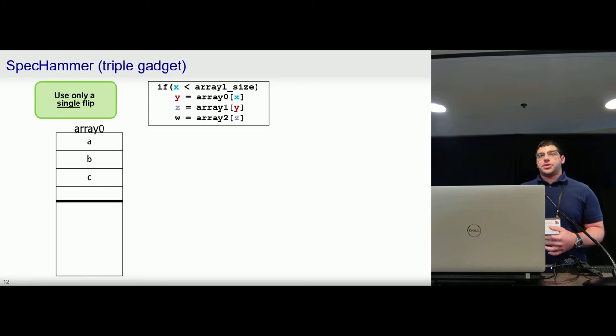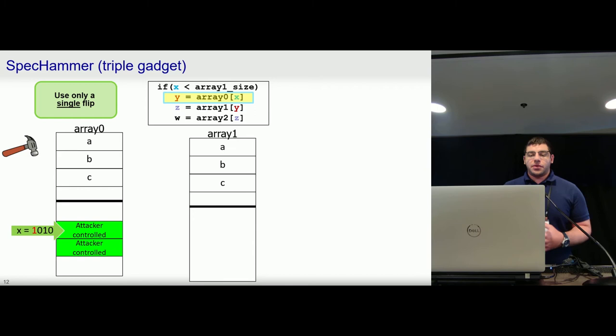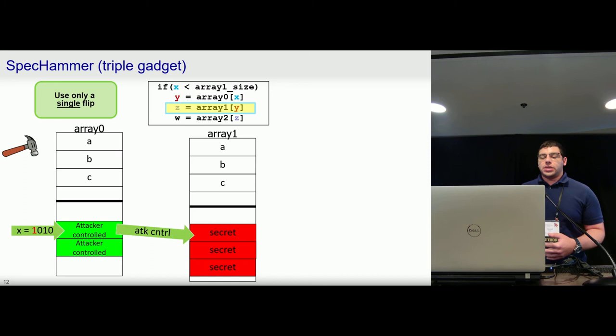And the goal here is to show how we can use just one Rowhammer bit flip in order to arbitrarily target any value in victim memory. So we begin like before, where we call this victim code enough times to naturally train the branch predictor to predict that X will be in bounds. And suppose, again, X is equal to two, we'll now use Rowhammer to flip a bit and point out of bounds. But instead of targeting the secret directly, we want to target data that we control. And we can set this value to be whatever we need such that when it's used to index into the next array, it will point to the secret that we want to target.